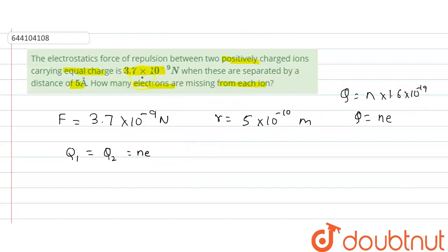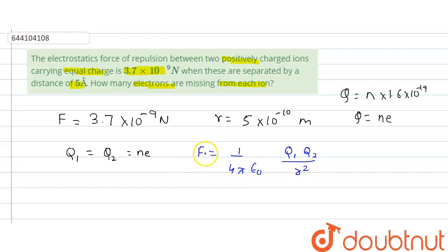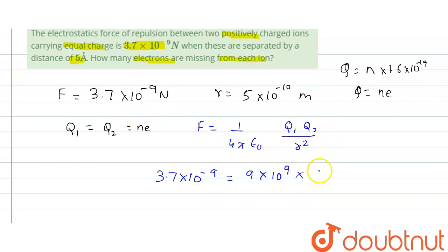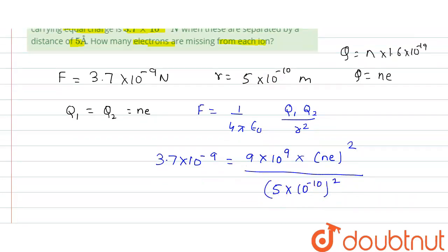We can now proceed since we have the force, the charges, and the distance. The Coulomb's law formula is F = (1 / 4πε₀) × (q1 × q2) / r². Here F = 3.7 × 10⁻⁹, the constant 1/4πε₀ = 9 × 10⁹, q1 and q2 are both equal to ne, so we get n²e², and r = 5 × 10⁻¹⁰ meter, so r² = (5 × 10⁻¹⁰)².